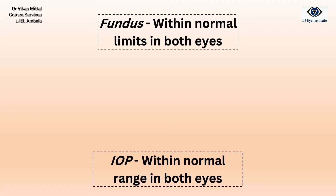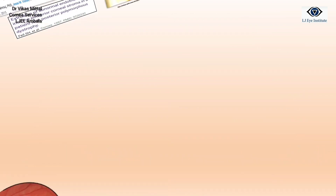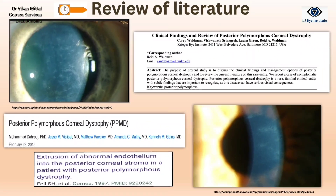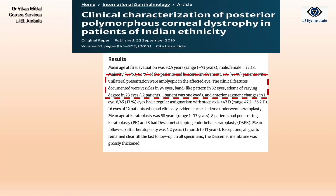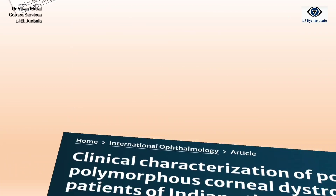Her rest of the ocular examination was within normal limits. Upon reviewing the literature, we found that corneal abnormality in PPMD occurs at the level of DM and endothelium. There are three main patterns in which PPMD presents: endothelial vesicle-like lesions, band-like lesions, and diffuse opacities.